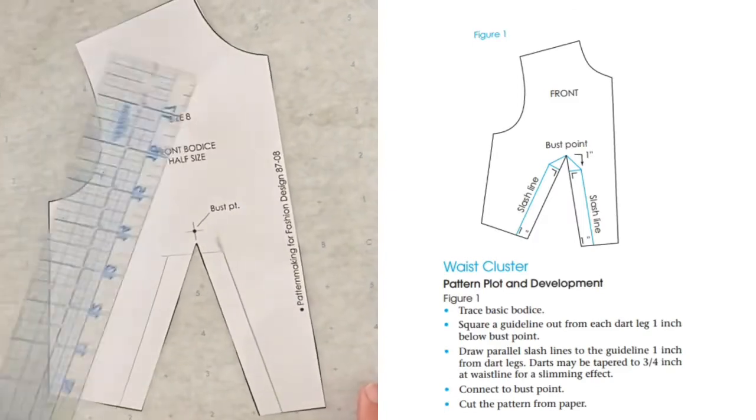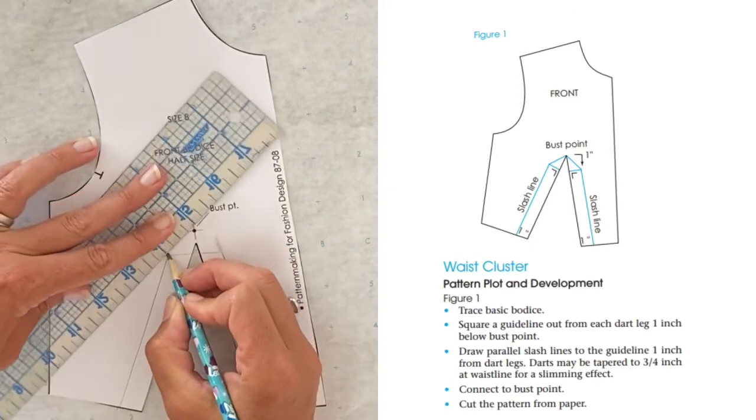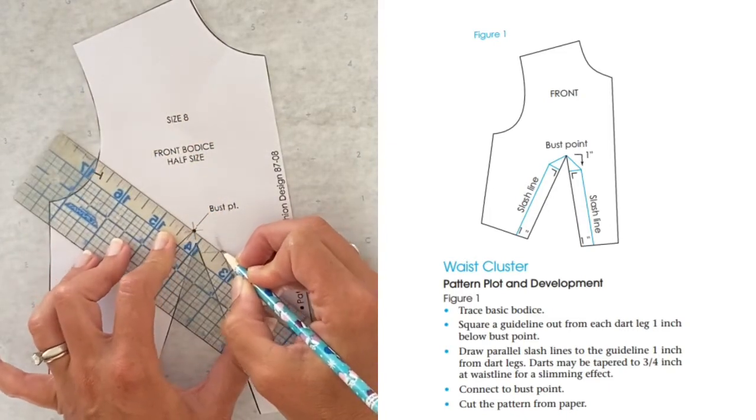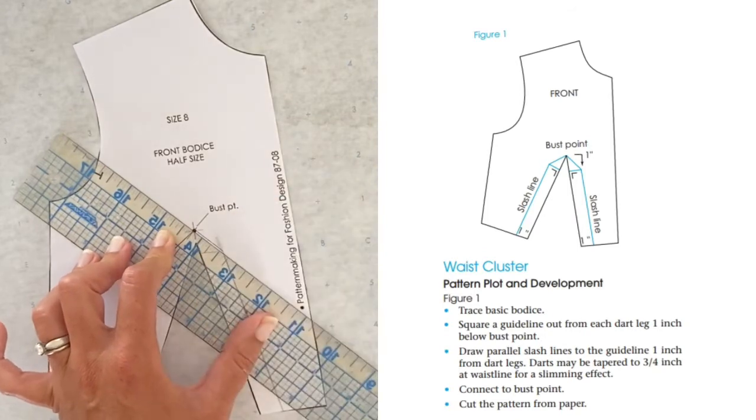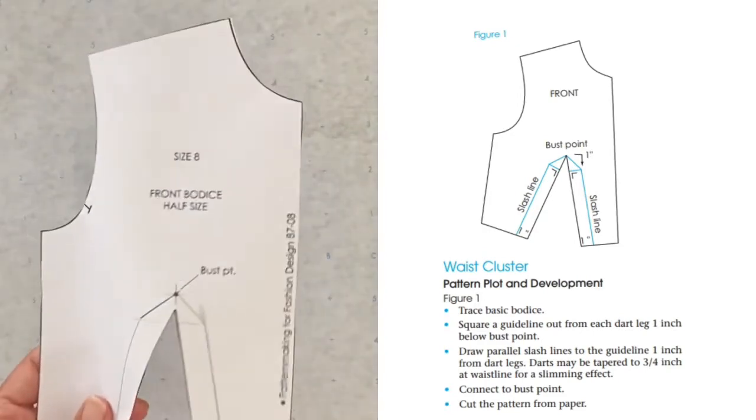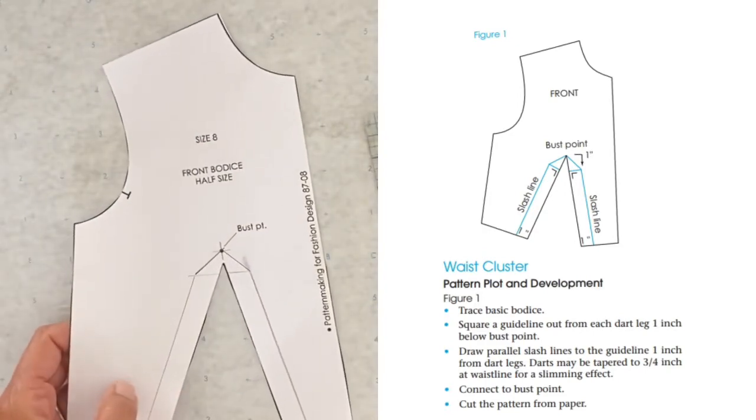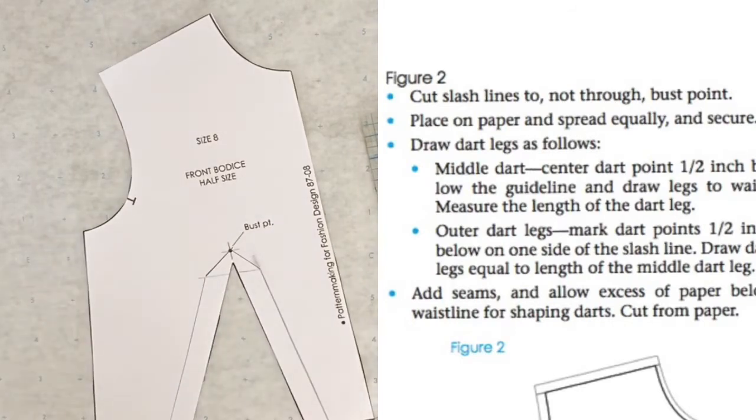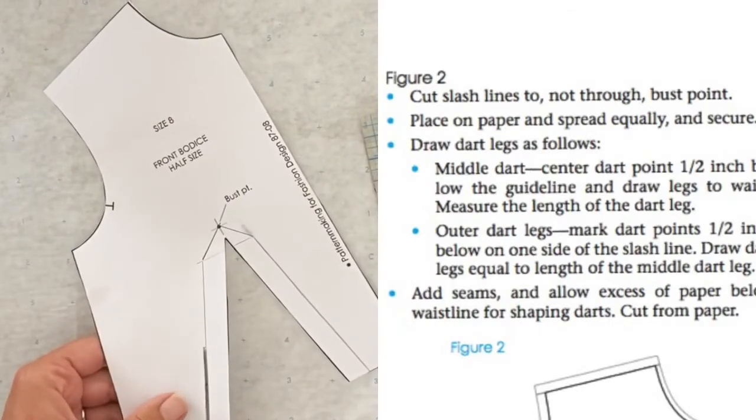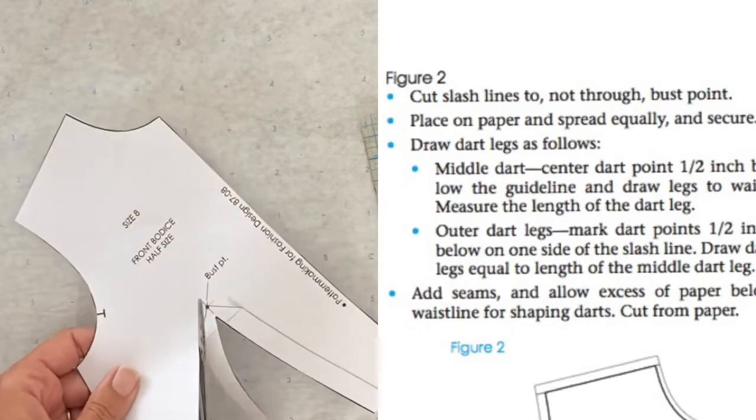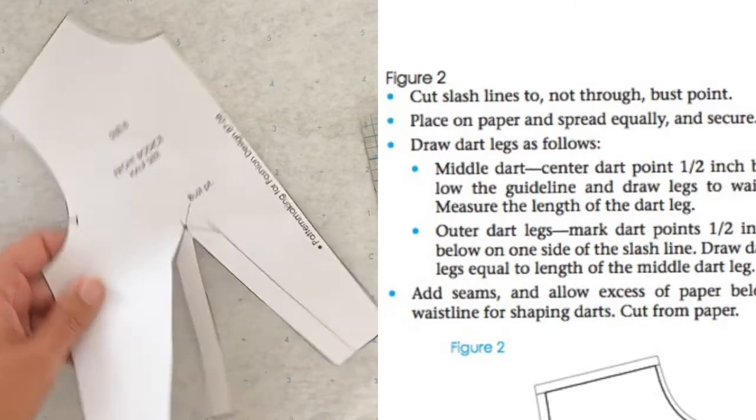They want us to connect this line to the bust point. Now we are going to cut the pattern from paper, but I actually already did that, so I'm just going to move on to the next step, which is to cut our slash lines, but not through the bust point. Let me get my scissors.